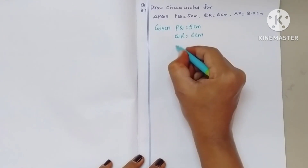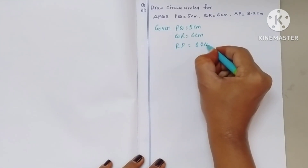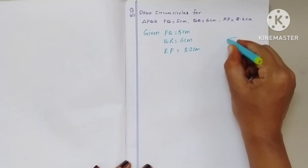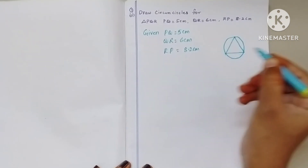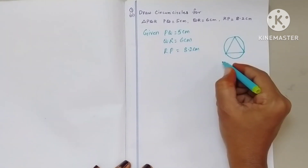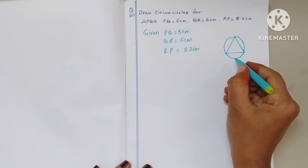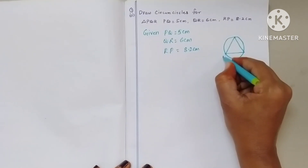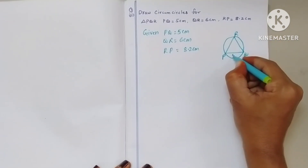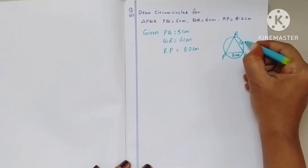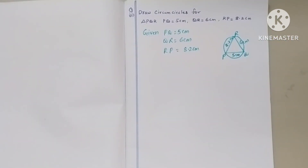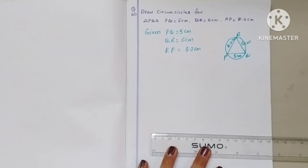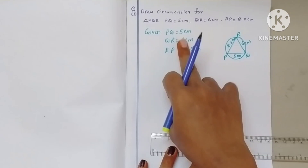Now draw the rough diagram — draw one circle and a triangle in that. We can take the second highest side as base, or we can take PQ also as base. So in the rough diagram: PQ is 5 centimeters, QR is 6 centimeters, and RP is 8.2 centimeters.